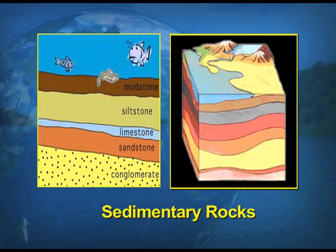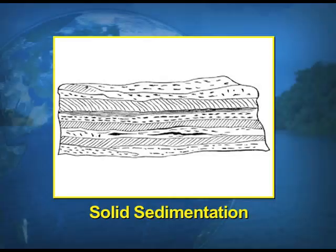Looking at the screen, you can see two visuals of sedimentary rocks. One visual shows sedimentation done by the river. When sedimentation is done by the river in water, the sediments are deposited according to their weight. Down below we have the conglomerates, on top we have sandstone, further we have limestone, then silt formation, and finally mudstone. The second visual shows solid sedimentation of deposits — when layer after layer is formed, the pressure of the layers results in the formation of sedimentary rocks.